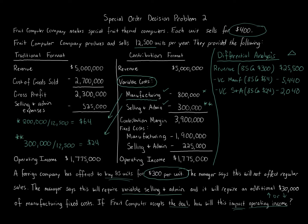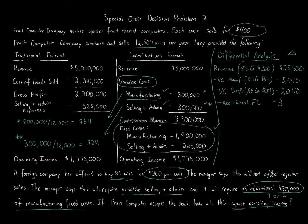Fixed costs are fixed and stay the same, but we are told an additional $30,000 of manufacturing fixed costs must be included here. So we subtract that additional $30,000. You can already see that revenue is $25,500 while fixed costs alone are $30,000 — it's going to be a loss. The final result is negative $11,980, meaning accepting this deal reduces operating income by $11,980.